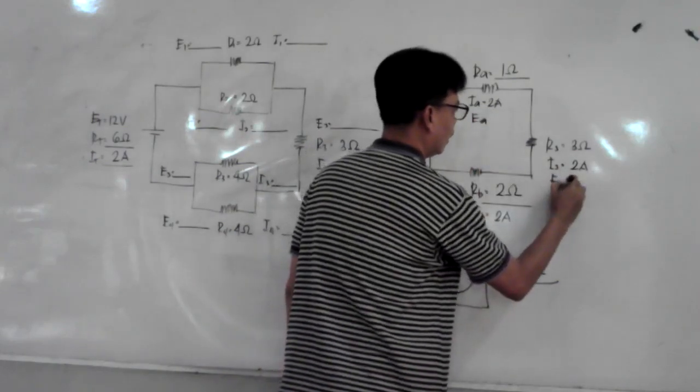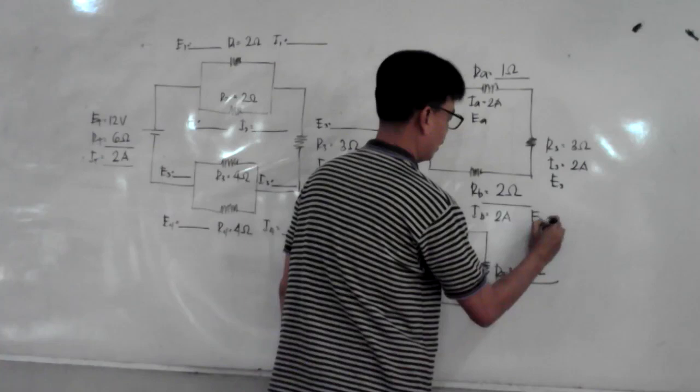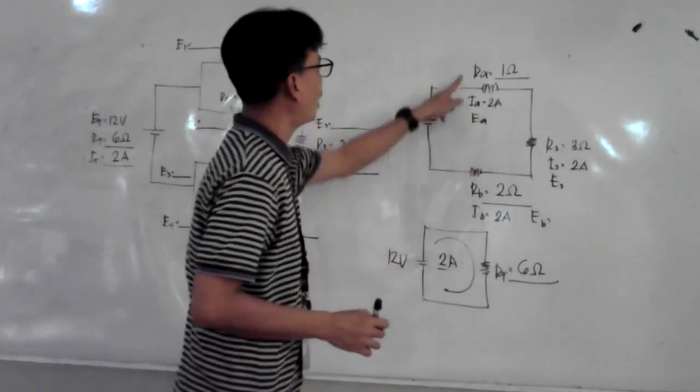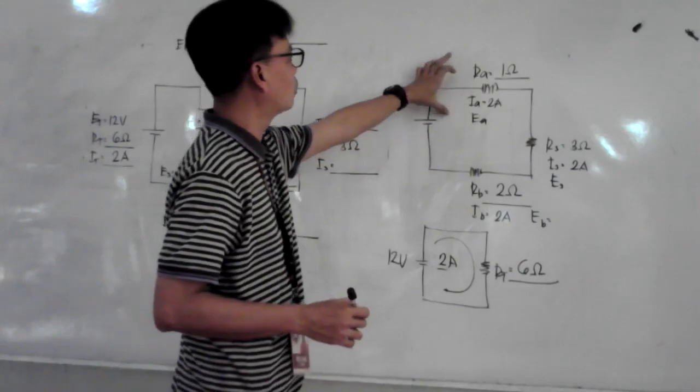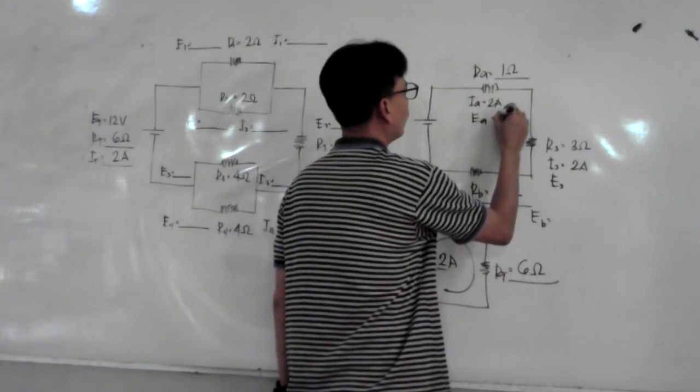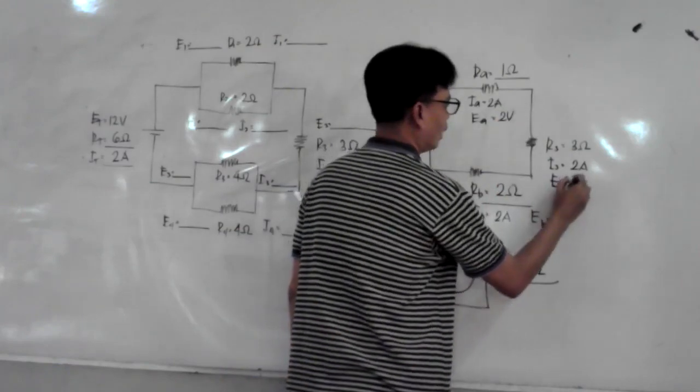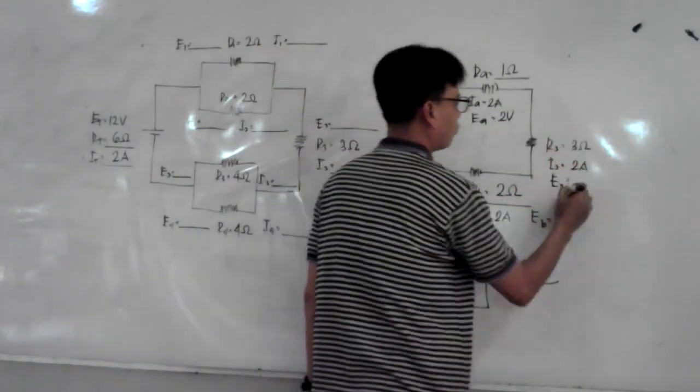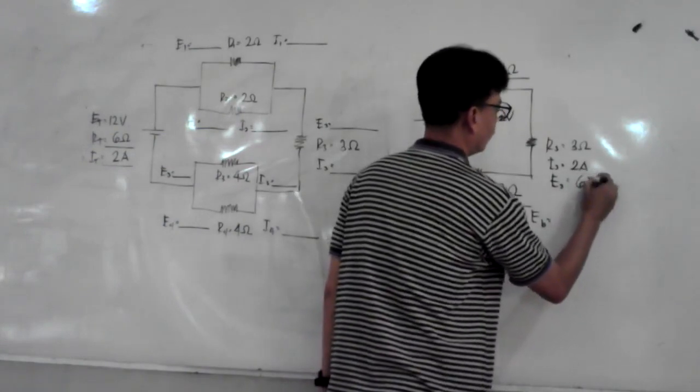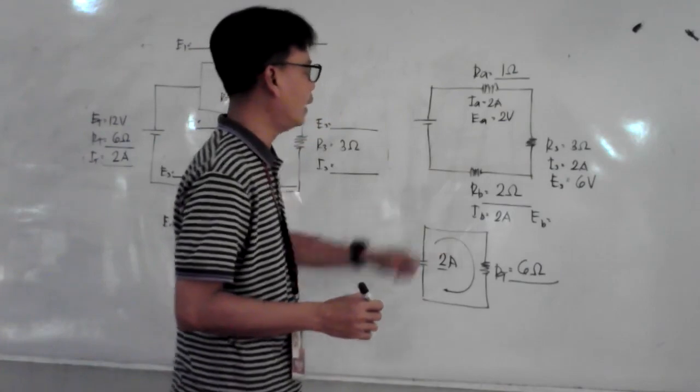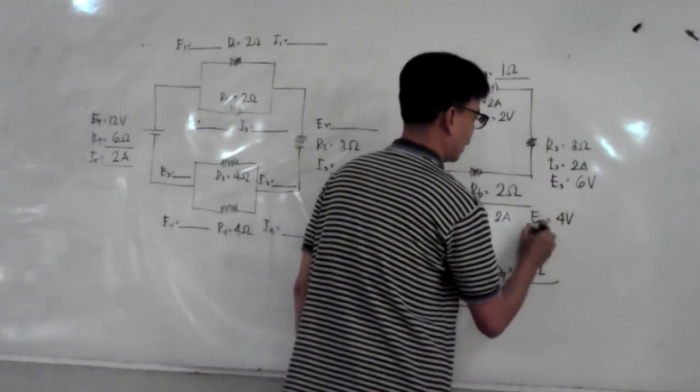Let's solve for Ea, E3, and Eb. You have R and I, so just multiply to get the voltage. That is 1 times 2, so you have 2 volts. For E3, it's 3 times 2, so you have 6 volts. And for Eb, it's 2 times 2, so you have 4 volts.